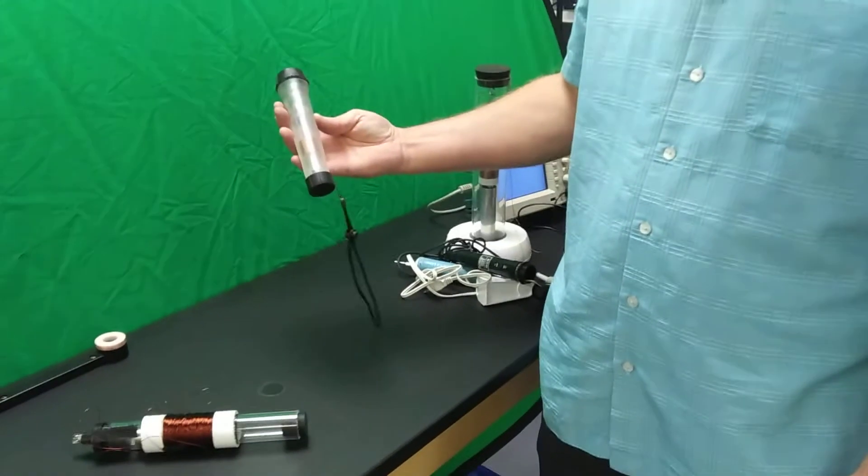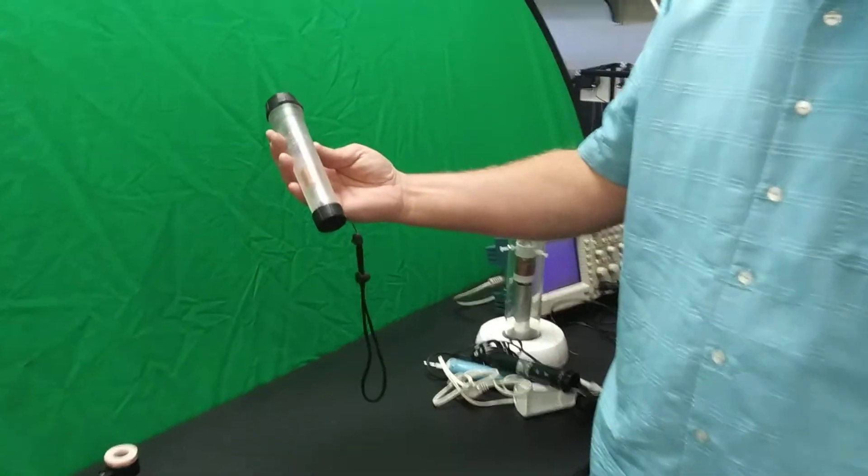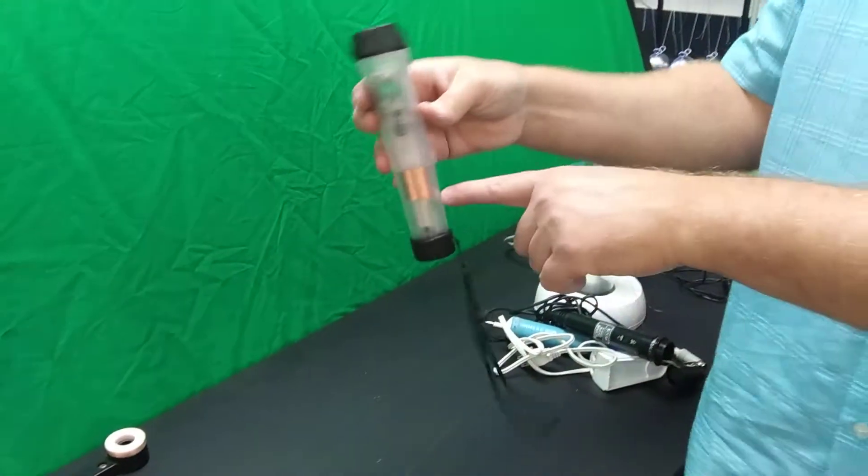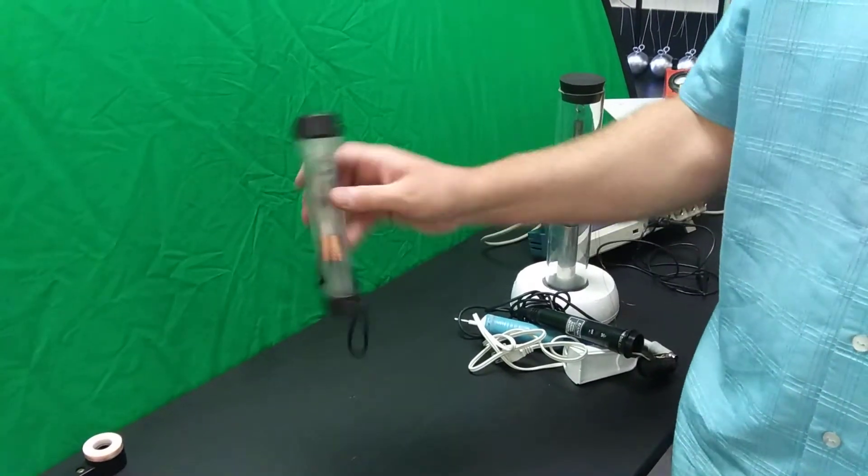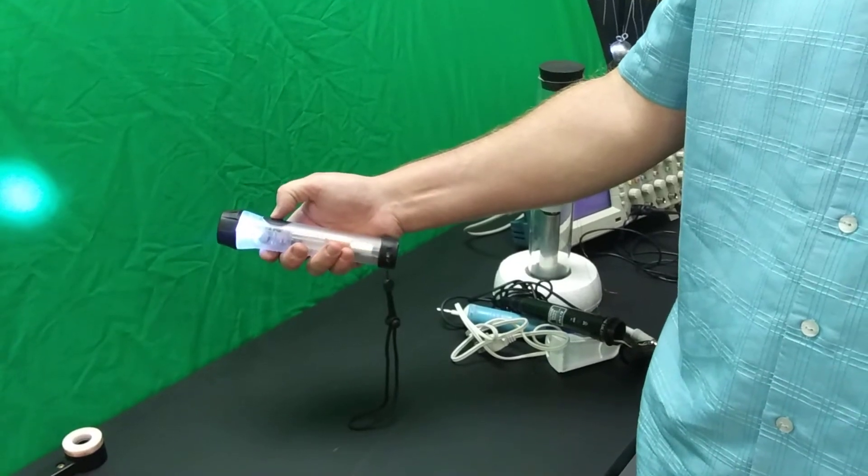All right. So you've probably seen one of these before. It's a little bit hard to see, so we've made a simplified model of it right over here, but basically there's a magnet and a coil in there. So as I do this back and forth, we get the flashlight to light up.